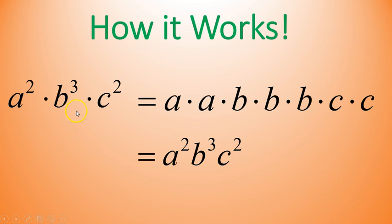One very common mistake is that people will join them together and write a, b, c to the power of 7 — adding up all the exponents — which is not the same as this. This is a squared b cubed c squared, and that's the way we'd say it and write it. It's important to not join together different bases.